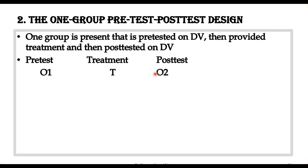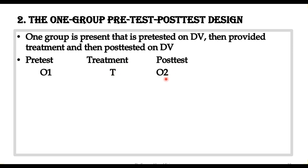The pre-test is represented by O1, which means the first observation or the pre-test. The treatment is represented by T, and the post-test is represented by O2. So it is a better experimental design than the one-shot case study, as the pre-test score is now available.